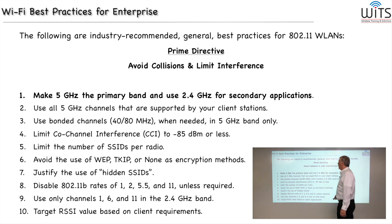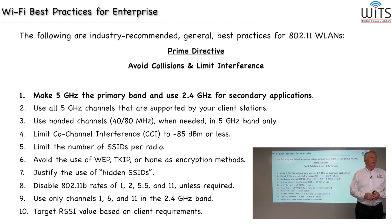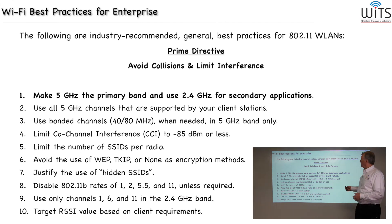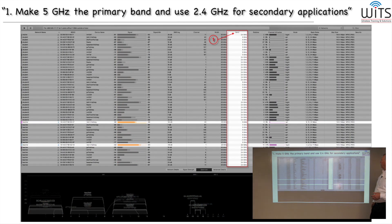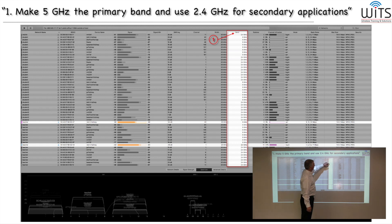Best practice number one: make 5 GHz your primary band and use 2.4 GHz only for secondary applications. To explain what that means — what is a primary band, what's a primary application — we'll use a school as a case study. Here's the Wi-Fi Explorer view showing the two bands. You can determine the bands in use with the band column, and we see both 2.4 and 5 GHz.